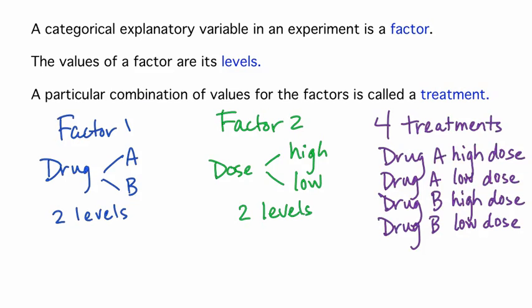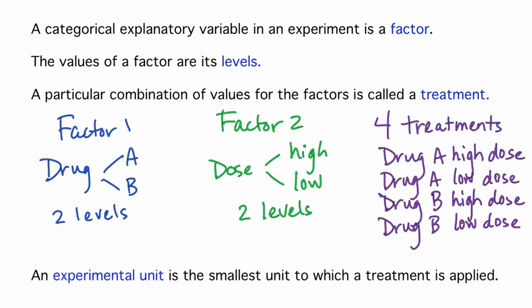In experiments, the participating subjects or individuals are called experimental units. Sometimes treatments are given to groups of people or things, like all of the students in a class receiving a new teaching method, or all of the plants in one pot receiving a new type of fertilizer. The experimental unit is then not the individual student or plant, but the whole class or pot. Using this vocabulary, the key feature that separates an experiment from an observational study is that treatments are imposed on experimental units by the researcher so that the effect of the treatments on the response can be seen.